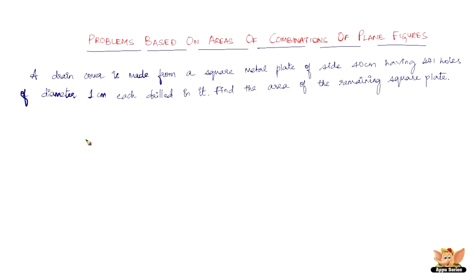In this video, let us solve problems based on areas of combinations of plane figures. We've got a problem here which reads: a drain cover is made from a square metal plate of side 40 cm having 441 holes of diameter 1 cm each drilled in it. Find the area of the remaining square plate.